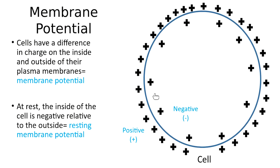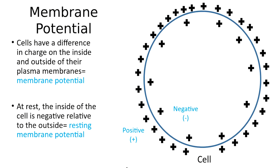If you look at this closely, we've got far less positive charge on the inside and far more positive charge on the outside of the plasma membrane. Because of this, we say that the membrane potential — the difference in charge on the two sides — is negative on the inside relative to the outside. The inside is less positive than the outside, and another way of saying that is simply that the inside is negative relative to the outside.